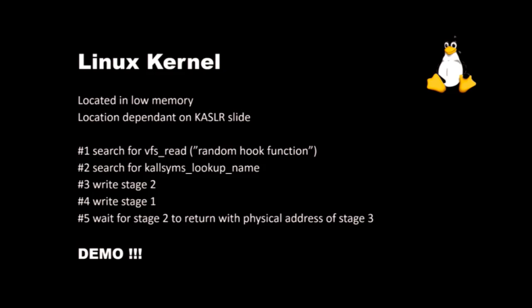Then I search for a function called kallsyms_lookup_name — this is pretty much the equivalent of GetProcAddress in Windows. It allows me to use a kernel symbol name and send it to that function, and it will look up the function pointer for that symbol. Then we write the stage 2 code and stage 1 code, then we wait for stage 2 to return with the physical address of stage 3. We write the complete stage 3 code, and then it's demo time.